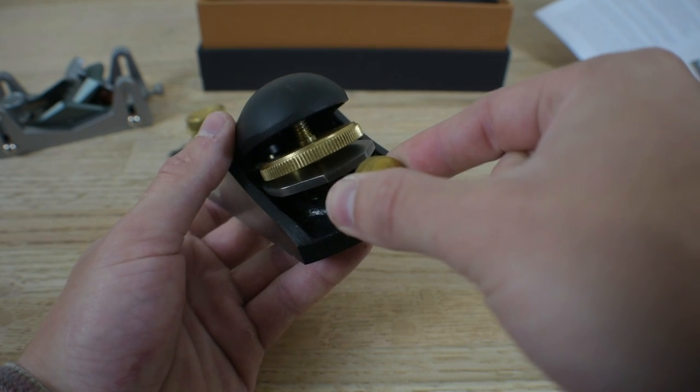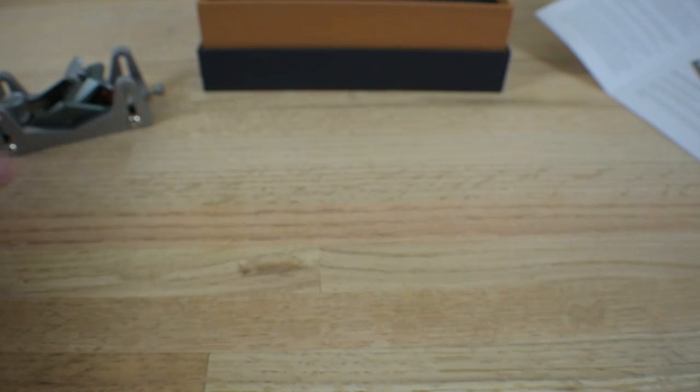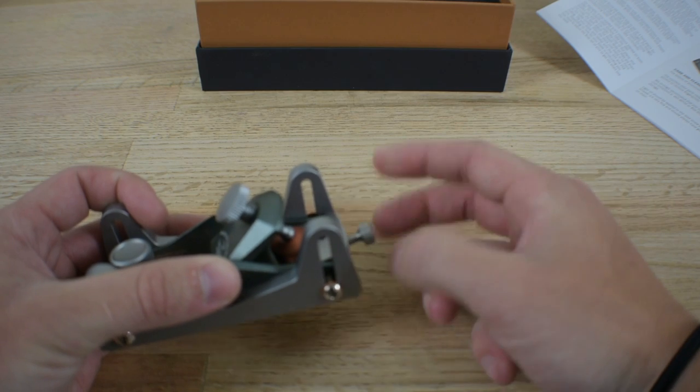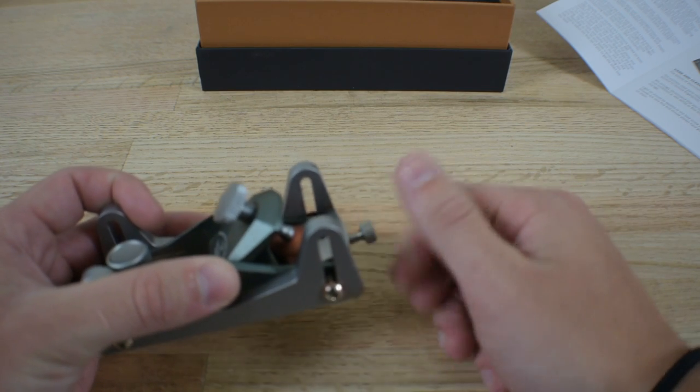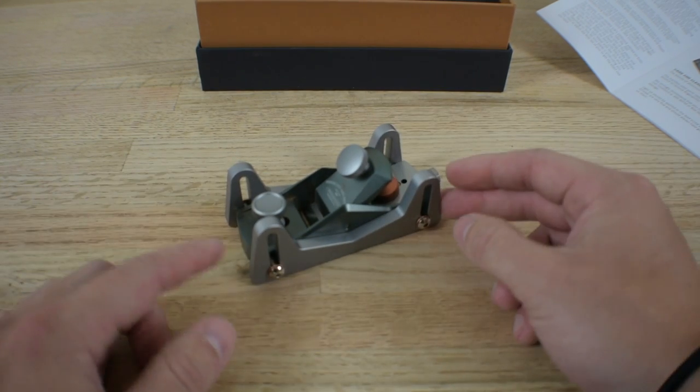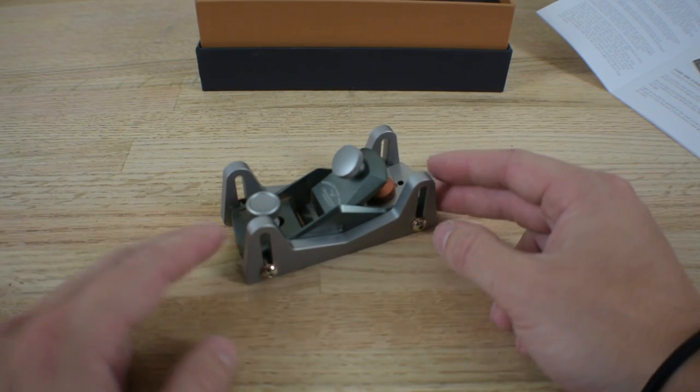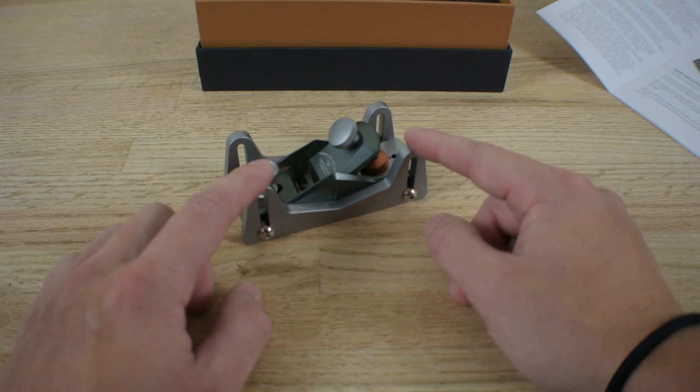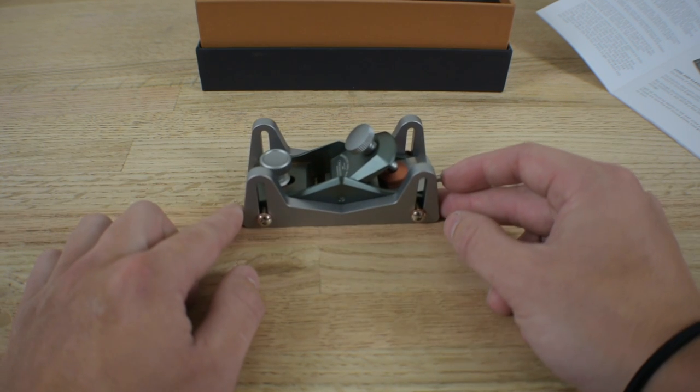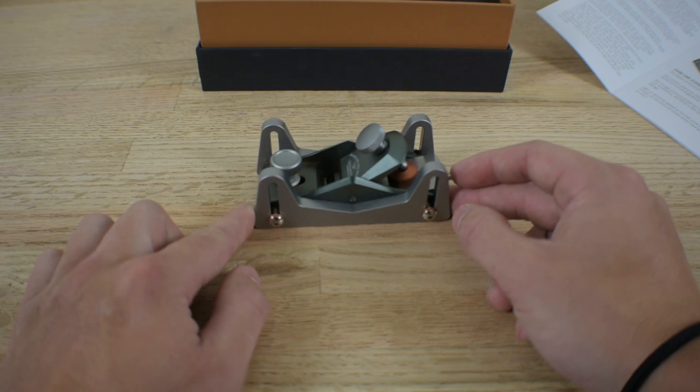If you're going the budget route, here is the Stanley Sweetheart block plane. Half a turn, whole turn, one and a quarter turns. On the spectrum of a premium plane, this Bridge City plane is a bit loose, very loose actually. But that's fine if you can get this plane like I did for less than a hundred dollars. I do want to say that this plane on its own retails on their website with no discounts at 165 dollars, so that's more money than any other block plane on the market.